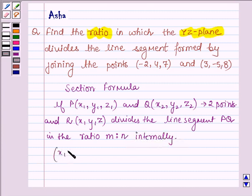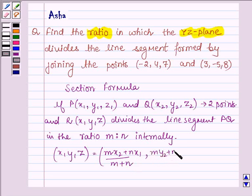Then X, Y and Z are given by MX2 plus NX1 upon M plus N, MY2 plus NY1 upon M plus N and MZ2 plus NZ1 upon M plus N.